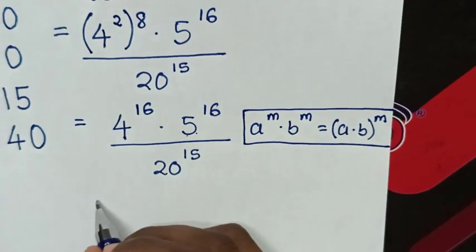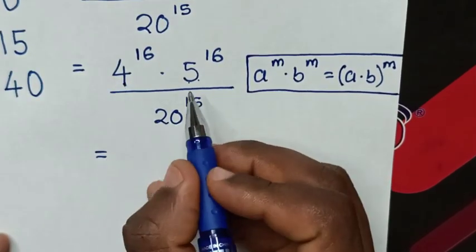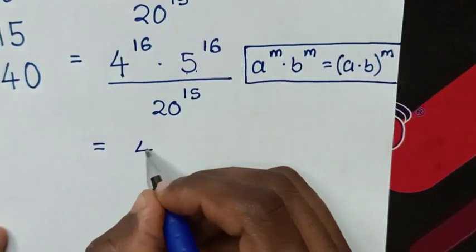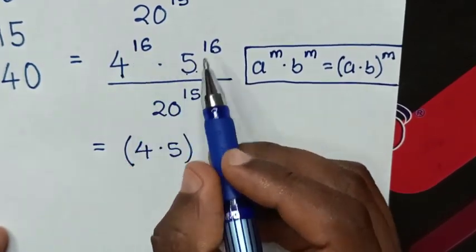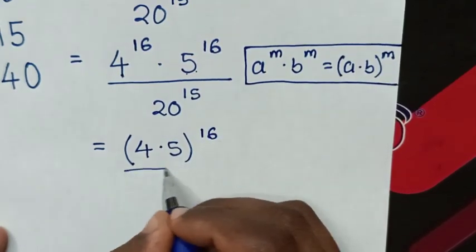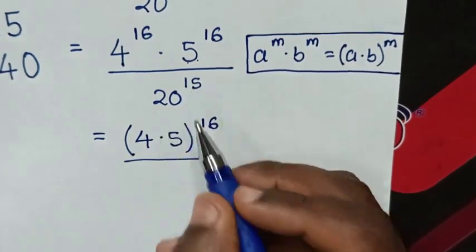So it will be equal to 4 times 5, then bracket common power of 16, then over this 20 power of 15.